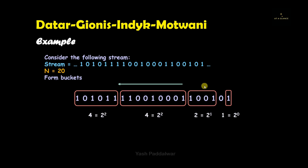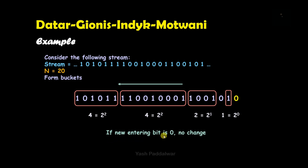Now consider a new bit — 0 — entering the stream from the right. Whenever the new bit that enters the stream is 0, you don't have to make any changes to the bucket arrangements, because this algorithm is specifically concerned with counting 1s. It is not bothered about the number of 0s entering the stream.